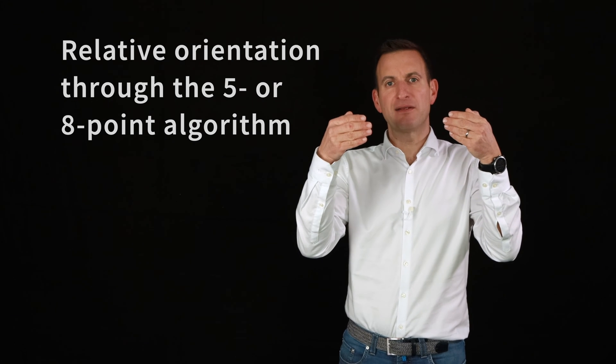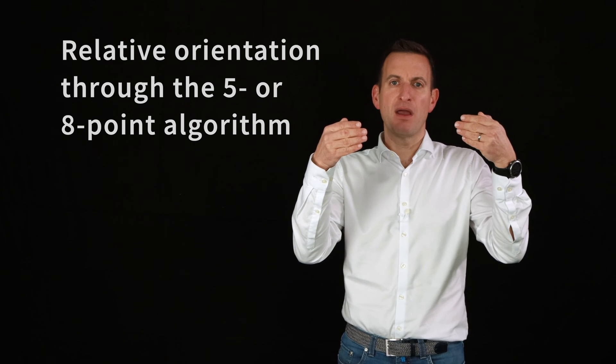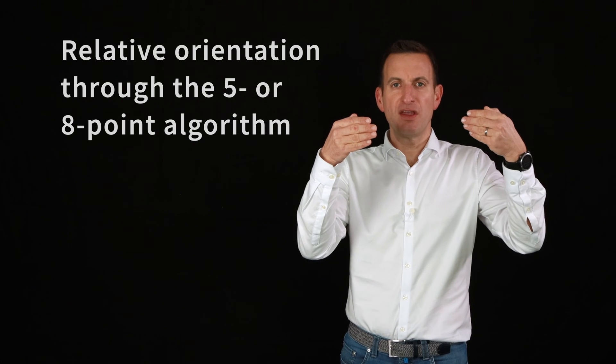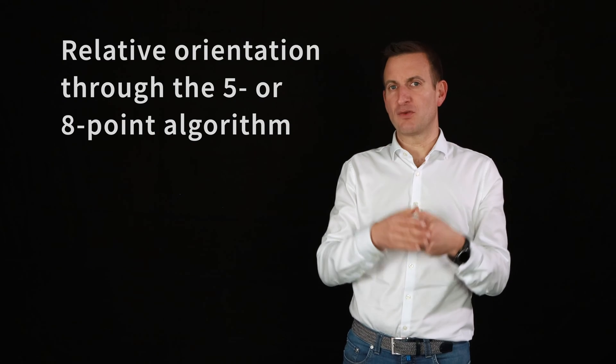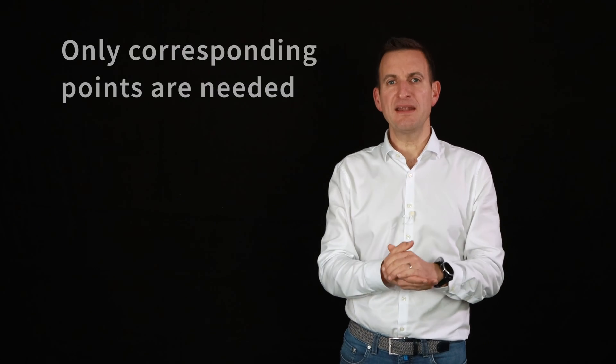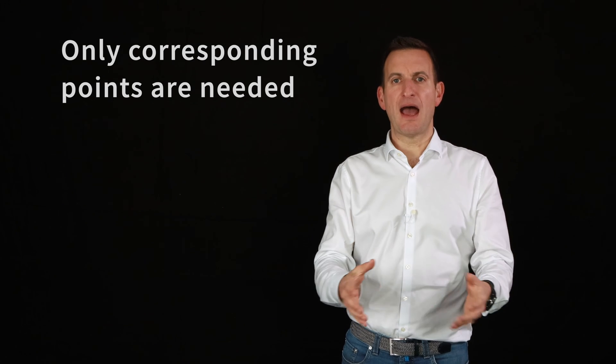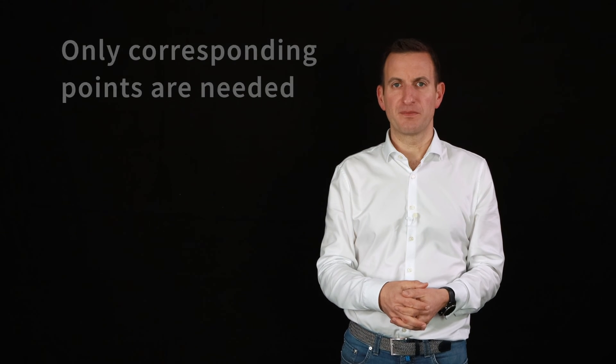So camera one typically defines the reference frame. And then we have the second camera, which describes how this camera is oriented and where it is looking to with respect to camera one. And we can get this information purely out of those corresponding points. There's actually a second video explaining a little bit more how that works.